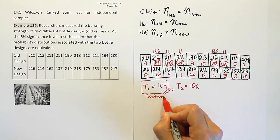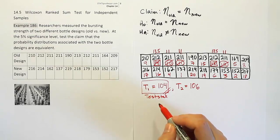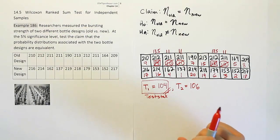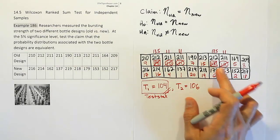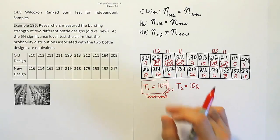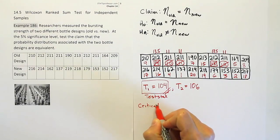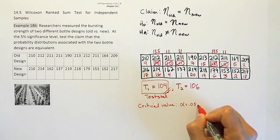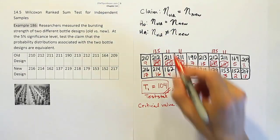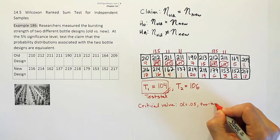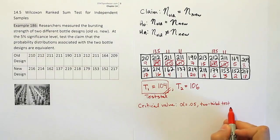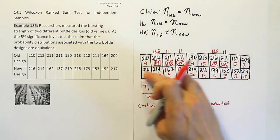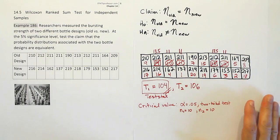Now we need the critical value. For the Wilcoxon Ranked Sum Test table, we need: alpha = 0.05, a two-tailed test (because HA uses not-equal-to), and sample sizes n1 = 10 and n2 = 10.